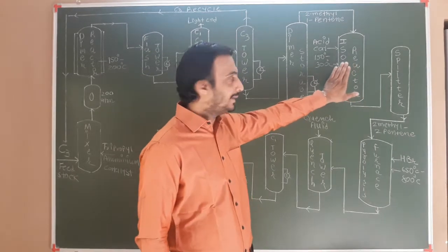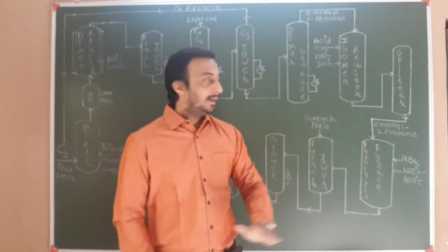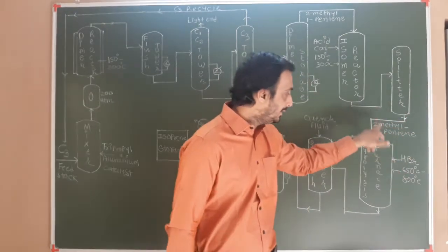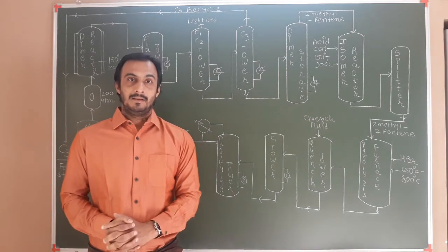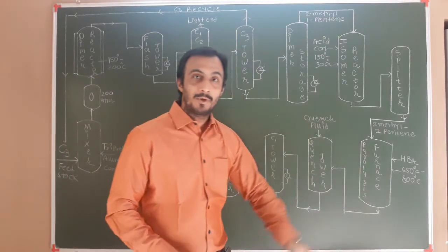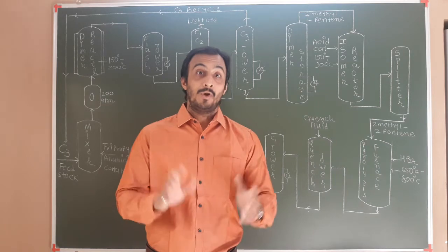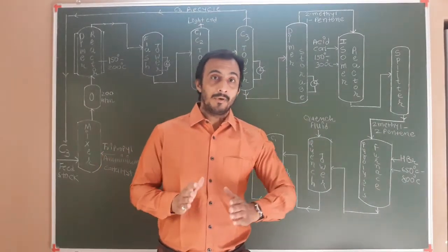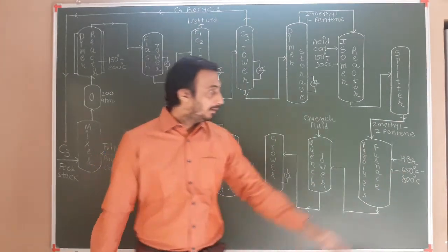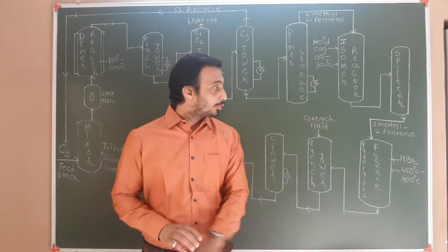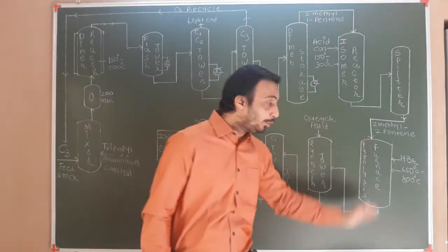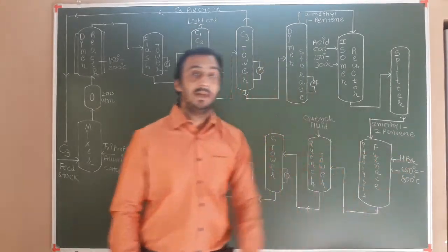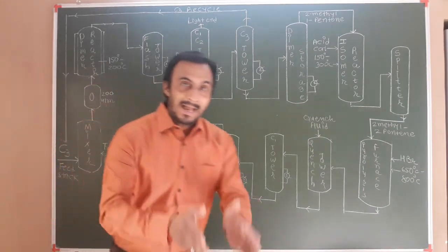The mixture of isomers is taken into a splitter. From here, some unreacted 2-methyl-1-pentene is discharged, and 2-methyl-2-pentene is discharged into a pyrolysis furnace. What is pyrolysis? Pyrolysis is the process in which transformation of a compound occurs with heat treatment. Here we also use HBr. So 2-methyl-2-pentene is pyrolyzed in this furnace at 650 to 800 degrees Celsius in the presence of HBr, forming isoprene.